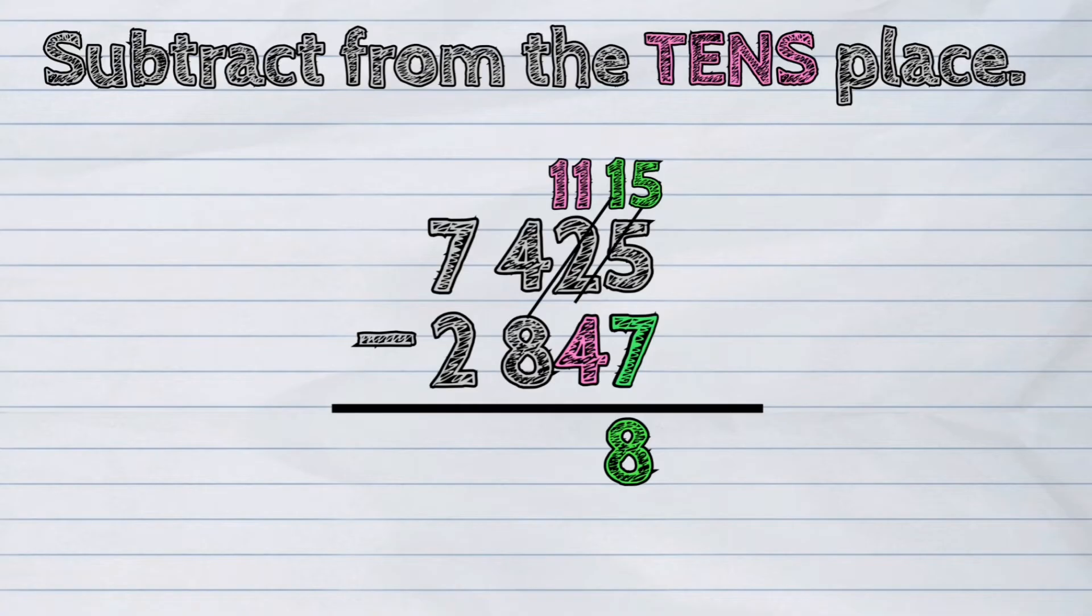Digit four in the hundreds place will now become three. Subtract four tens from eleven tens. Eleven minus four is seven.